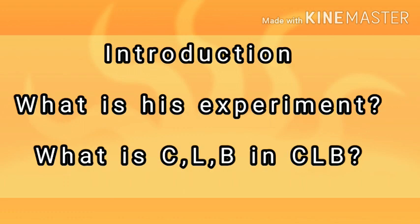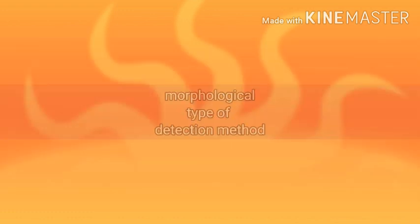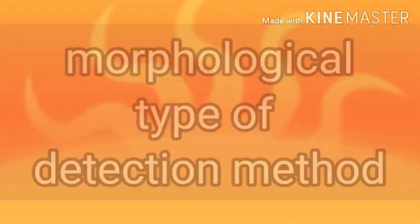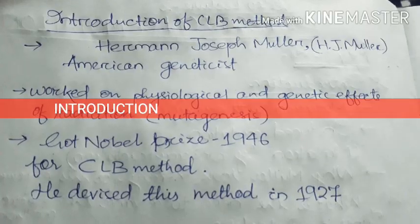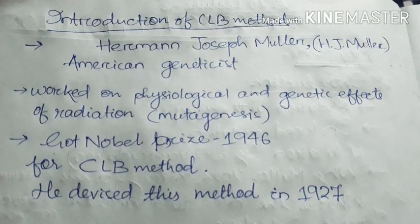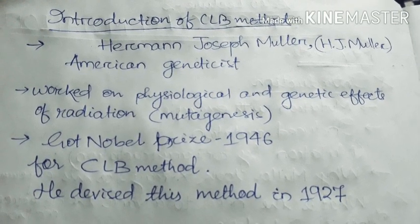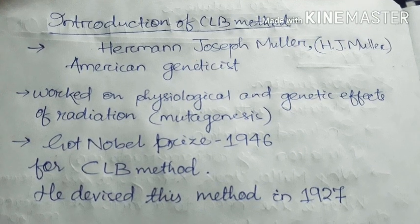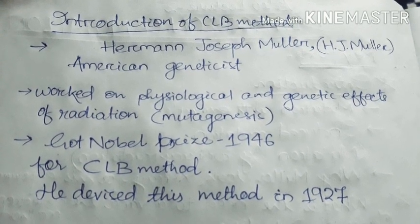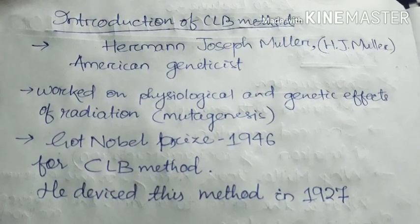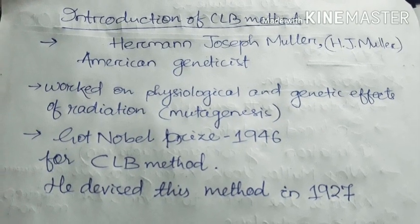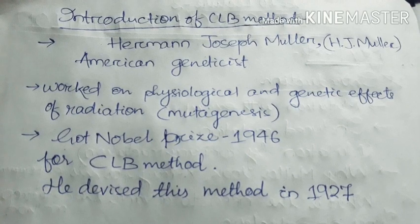Today we discuss three points in detail. Yesterday there was a question: why is this method under the morphological type of detection method? To get its answer, understand this topic thoroughly. This is the introduction of the CLB method. First, I have written Herman Joseph Muller — who is he? He is the American geneticist who worked on the physiological and genetic effects of radiation, that is mutagenesis. For this he got the Nobel Prize, and his main focus is on the CLB method, which he devised.